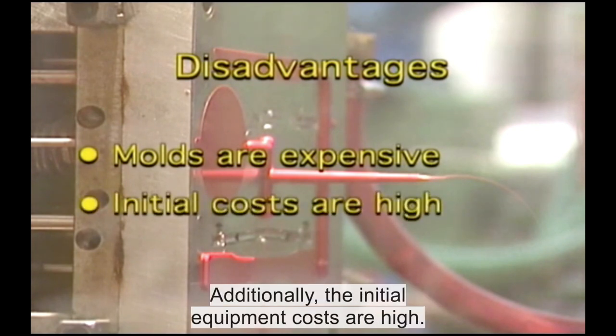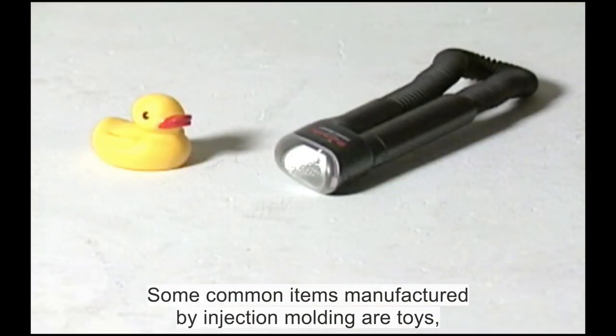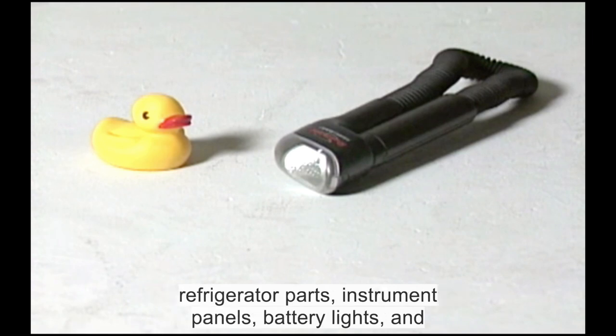Some common items manufactured by injection molding are toys, refrigerator parts, instrument panels, battery lights and model car kits.